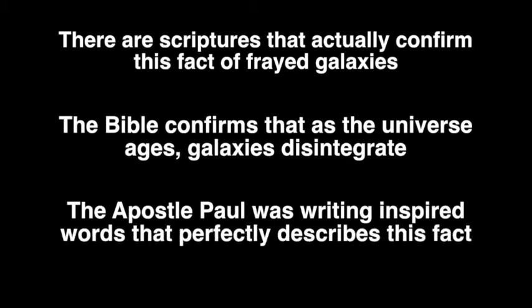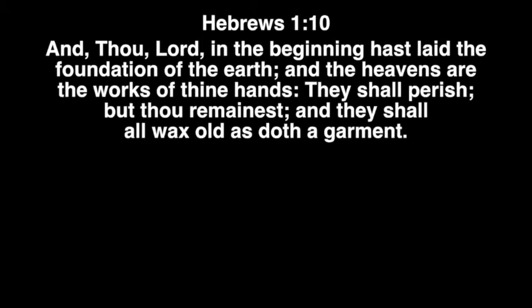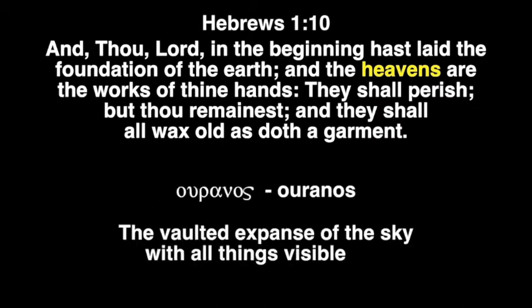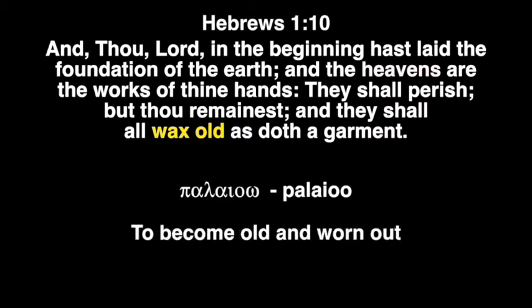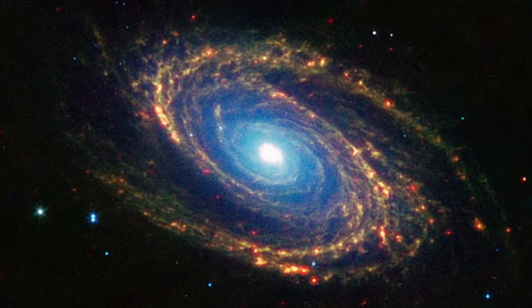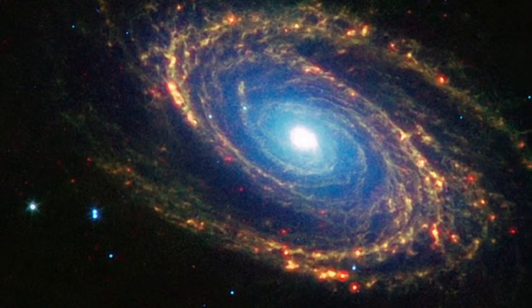And it was likely that the Apostle Paul didn't fully understand the real meaning of the inspired words that he wrote about our universe. Paul wrote in Hebrews 1:10, And thou, Lord, in the beginning hast laid the foundations of the earth, and the heavens are the works of thy hands. They shall perish, but thou remainest, and they all shall wax old as doth a garment. The word heavens is uranos, which means the vaulted expanse of the sky with all things visible in it. The term wax old is palayo'o, which means to become old and worn out. What happens when a cloth garment becomes old and worn? It becomes frayed. The edges become tattered and worn, exactly like the old galaxies described by Hugh Ross.